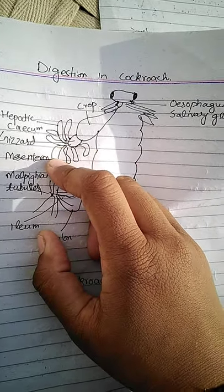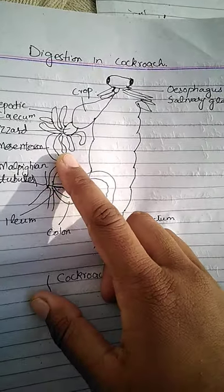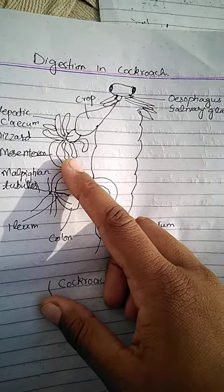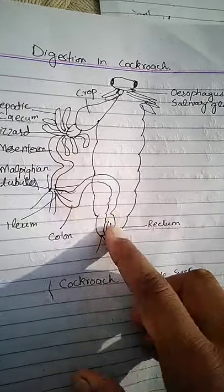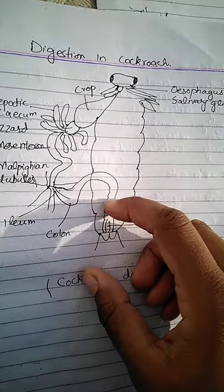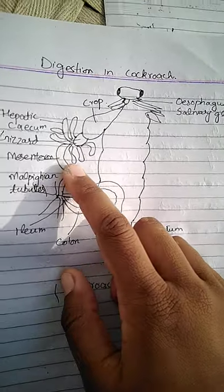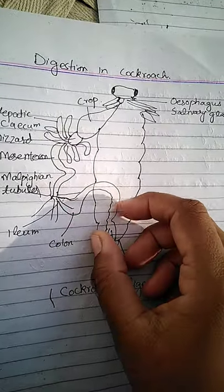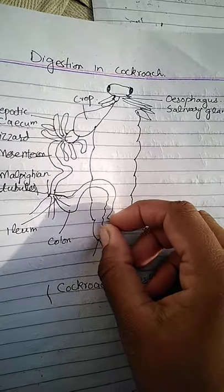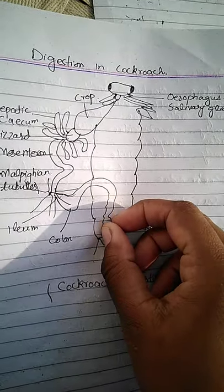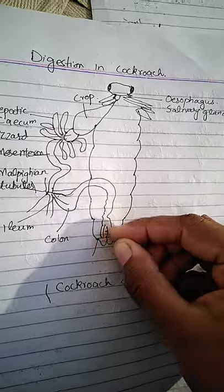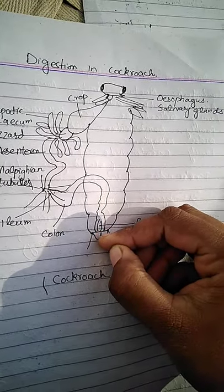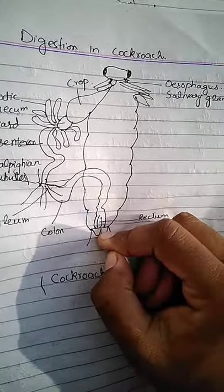The hindgut consists of long coiled tubules. At the terminal part of the hindgut is a thick chamber called the rectum. The rectum opens through the anus to the outside of the body.